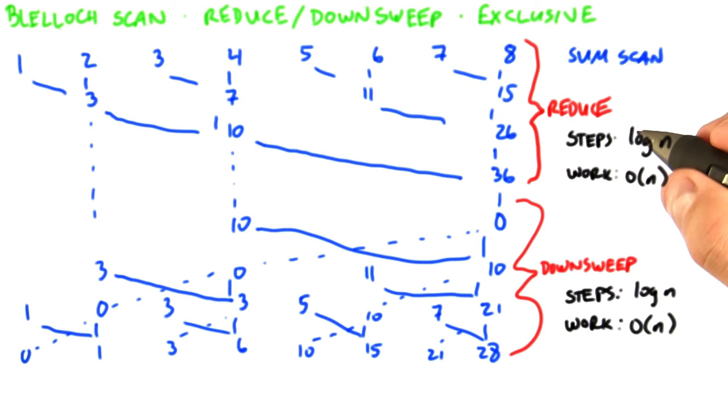But the advantage of this Blelloch implementation is less work overall. Recall again that the Hillis and Steele scan had O of n log n work, whereas the Blelloch scan has linear amount of work with respect to the input.